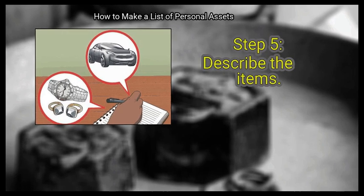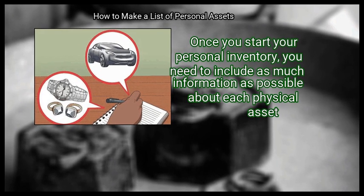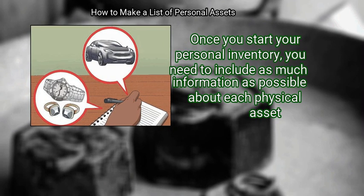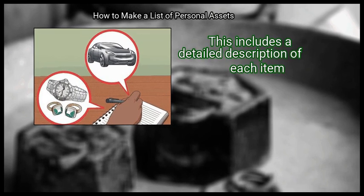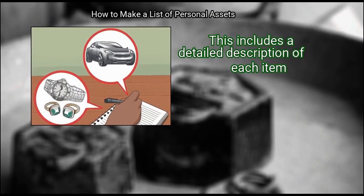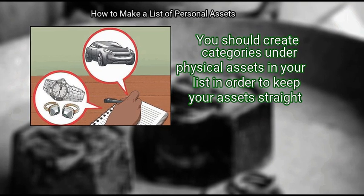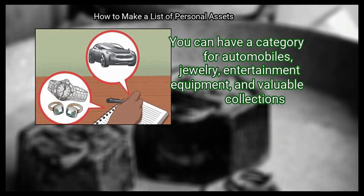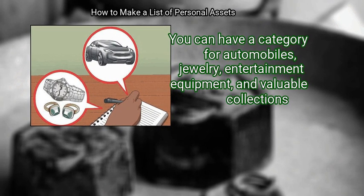Step 5: Describe the items. Once you start your personal inventory, you need to include as much information as possible about each physical asset. This includes a detailed description of each item. You should create categories under physical assets in your list in order to keep your assets organized. You can have a category for automobiles, jewelry, entertainment equipment, and valuable collections.